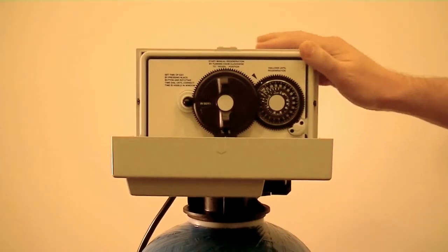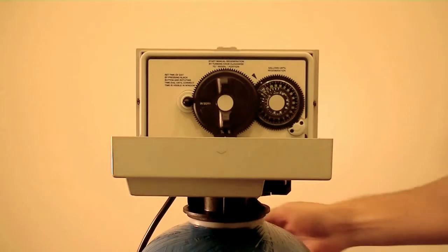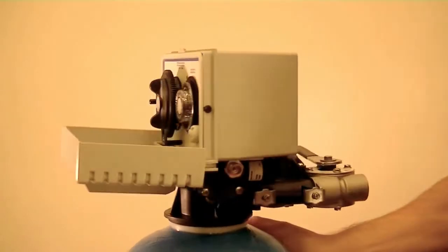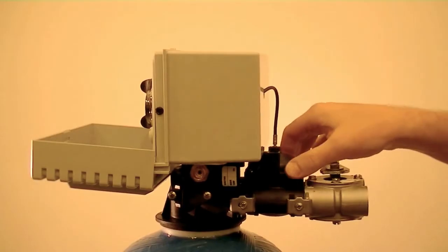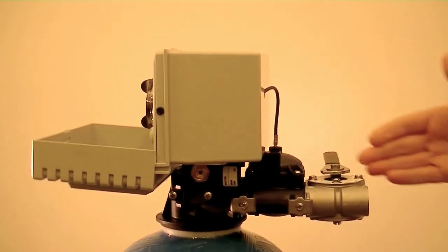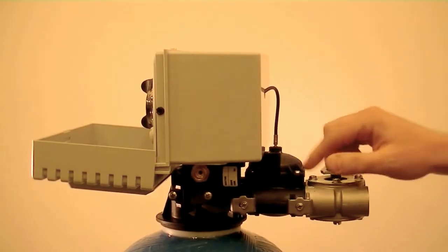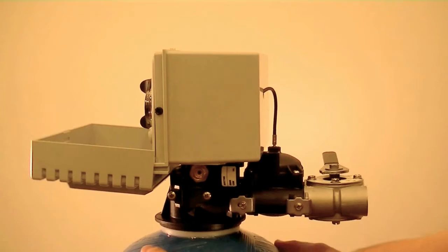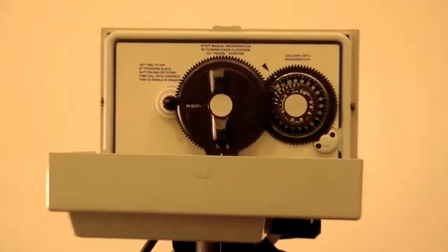You know that it's a demand control valve because it has a meter assembly countdown there. And also in the back of the control valve where the bypass is, you can see the meter assembly itself. So as water comes in and comes out, the turbine on the inside here spins, which then in turn spins this cable and then will turn this gallon dial here.